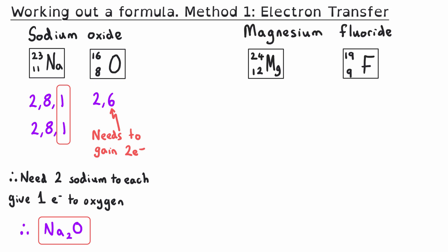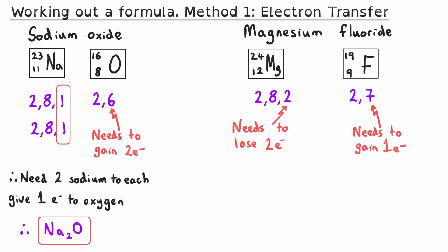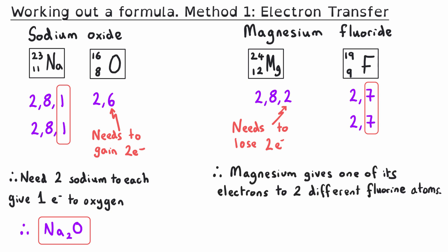For magnesium fluoride: magnesium (atomic number 12, electronic structure 2,8,2) has two electrons in its outer shell to lose; fluorine (atomic number 9, electronic structure 2,7) needs to gain one electron. Magnesium loses both outer electrons, giving one to each of two fluorine atoms — two electrons lost by one magnesium, one gained each by two fluorine atoms. The formula is MgF₂, meaning two fluoride ions for each magnesium ion.